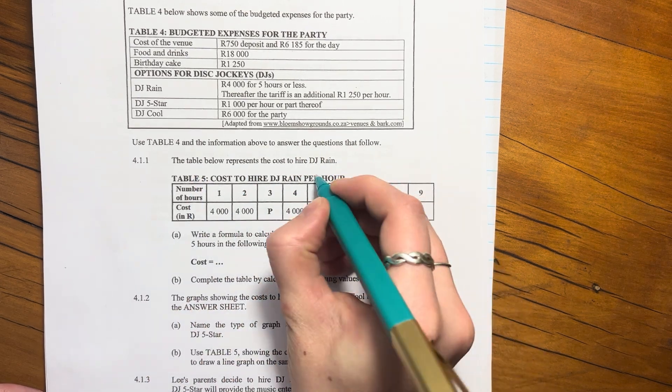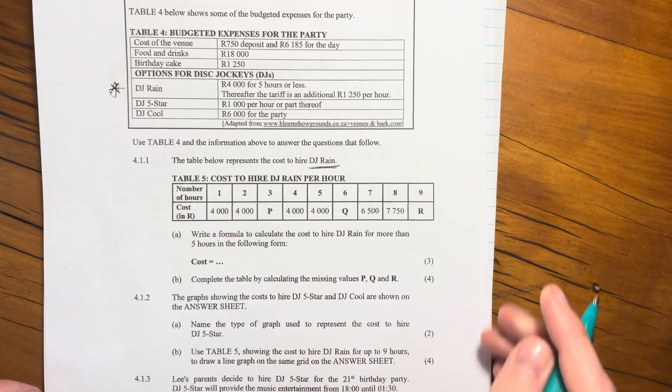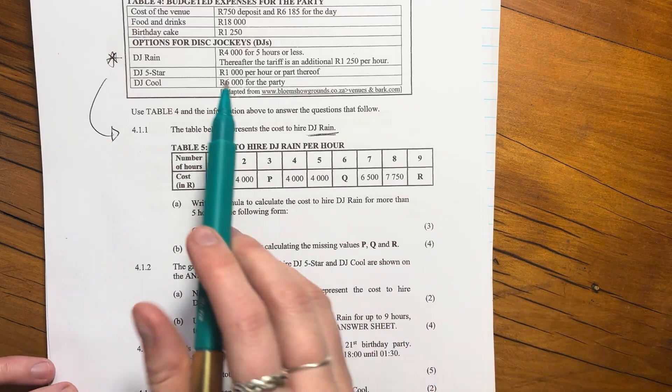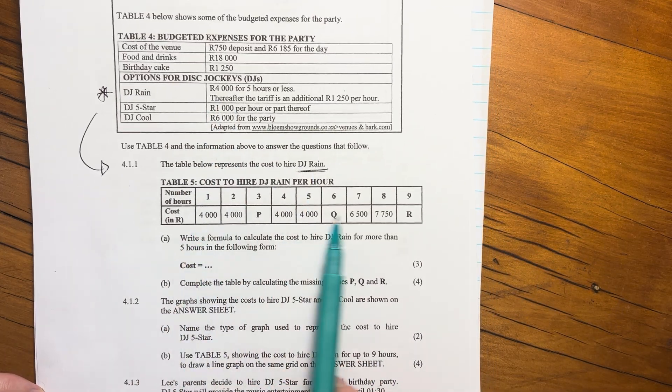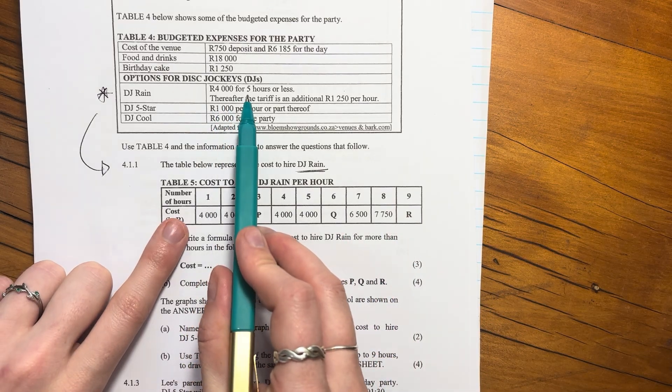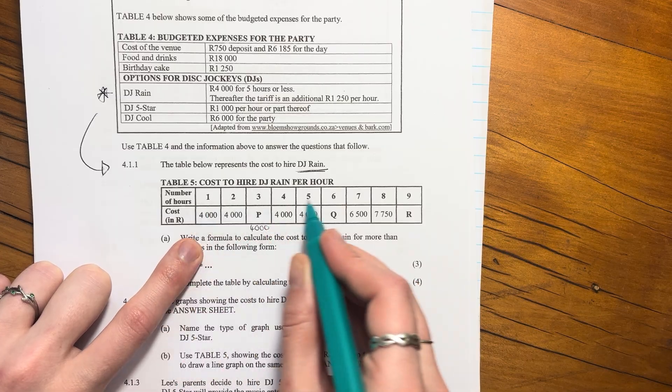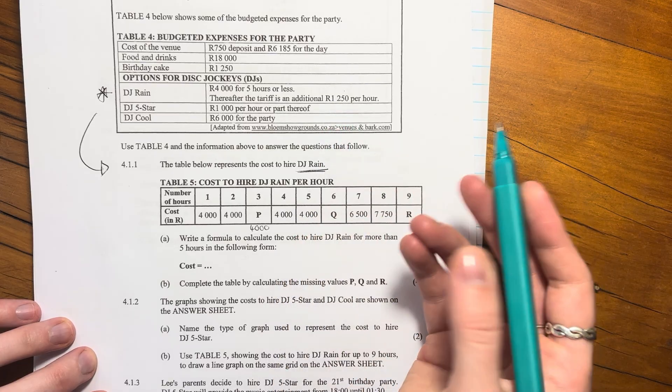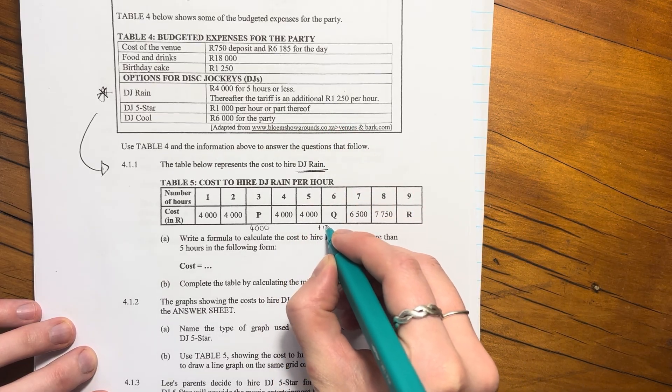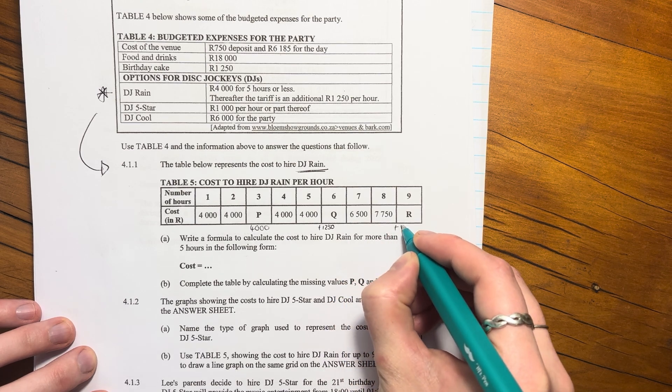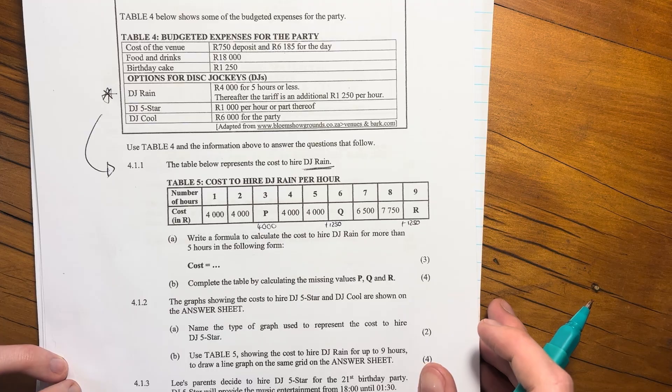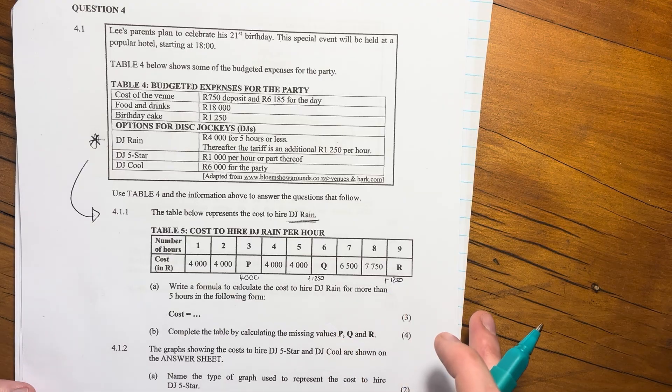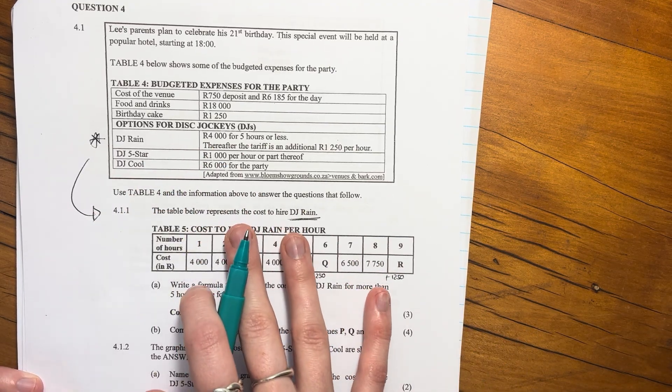The table below represents the cost of DJ Rain, so it's this one over here. What they've done is they've put the costs that were in words over there and they've put them into a table over here. So remember it said 4,000 for five hours, then after that there's a tariff, an additional tariff of 1,250 per hour. So after five hours we start adding this per hour.